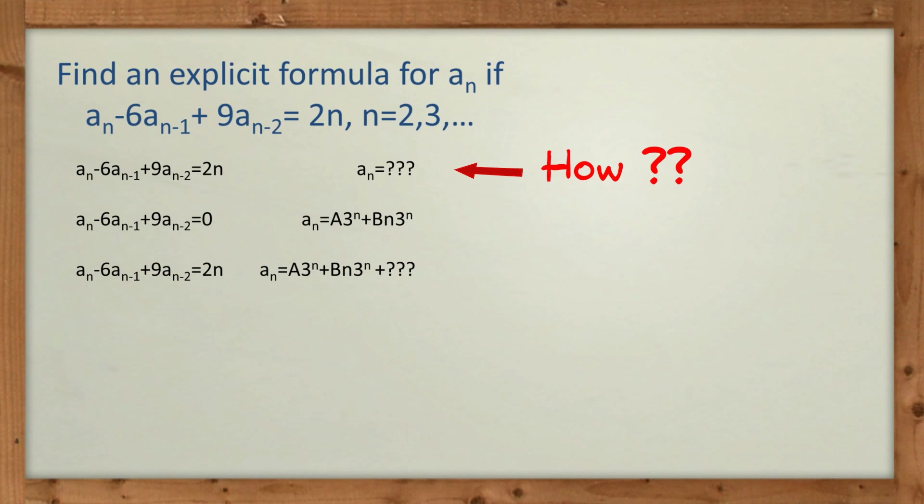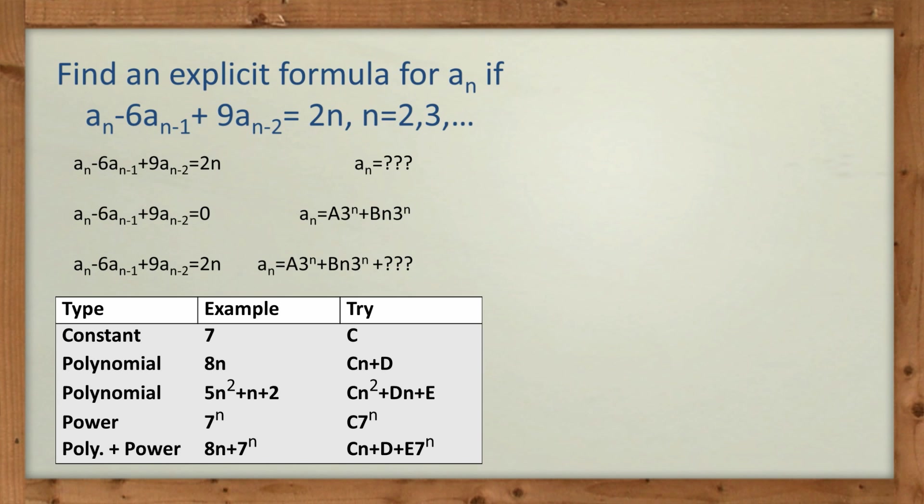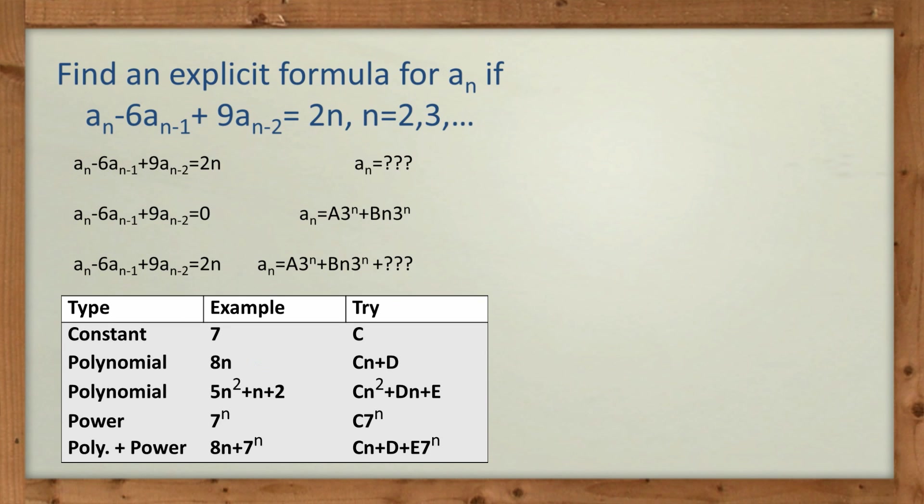So how do we go about now getting this particular solution for a right hand side of 2 times n? And going back to what we did in a previous question, this 2 times n suggests that we need to make a_n a polynomial. So here's a little table that you can just sort of look things up and you'll get the idea pretty quickly. So I've put here some examples and what you should try. So in our case, we've got a polynomial, it's a linear polynomial. So I've got the example here is 8 times n, but in our case, we're going to use 2 times n, that's fine. And what I'm suggesting that we try is big C*n plus D. And we're going to try and solve for C and D. So let's go and see if that'll work for us.